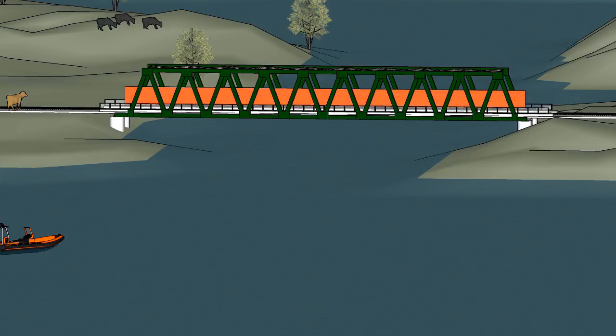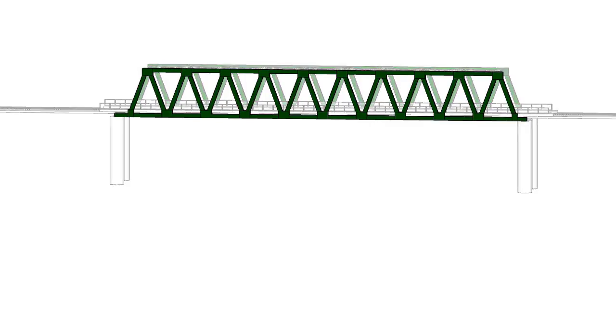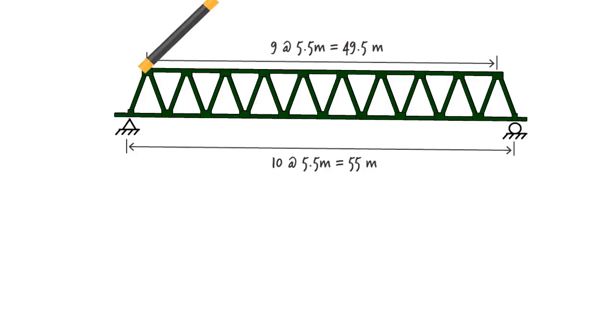Given the symmetrical nature of the bridge and the load, we only need to consider one of the trusses. Here, we assume the bridge is pin connected at the left end and rests on a roller at the right end. Knowing the dimensions of the truss, we are now ready to perform the required analysis.